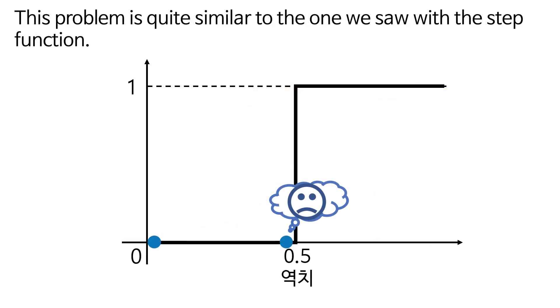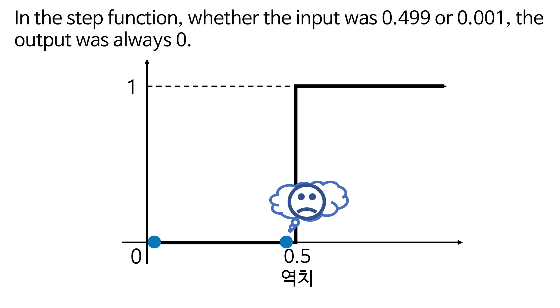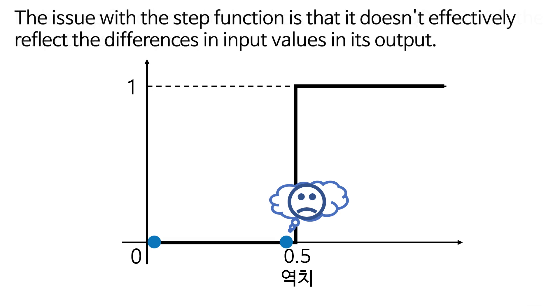This problem is quite similar to the one we saw with the step function. In the step function, whether the input was 0.499 or 0.001, the output was always zero. The issue with the step function is that it doesn't effectively reflect the differences in input values in its output.